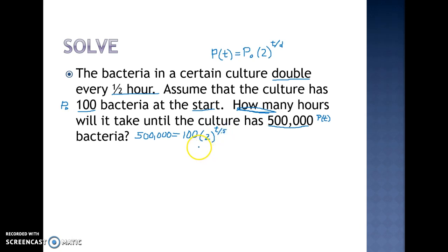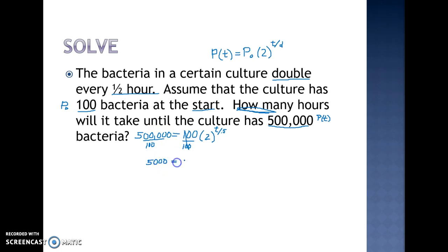Let's solve for t. The first thing we always do is divide by the starting amount — we move that to the other side to simplify. The 100s cancel, so I put this in my calculator and get 5,000 equals 2 with an exponent of t over 0.5. Here we have an unknown exponent.